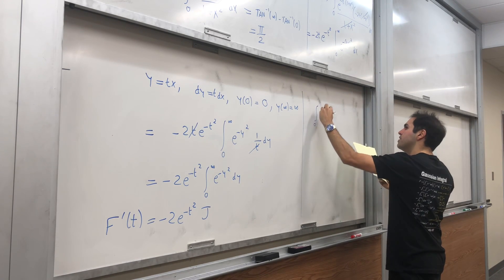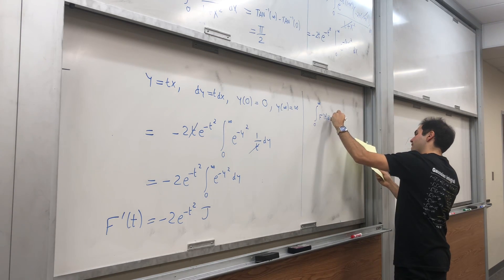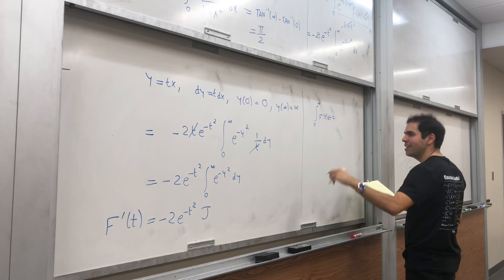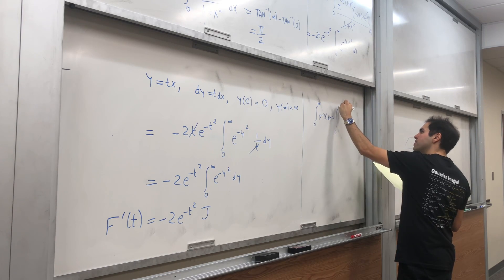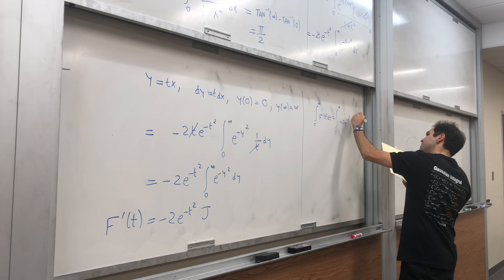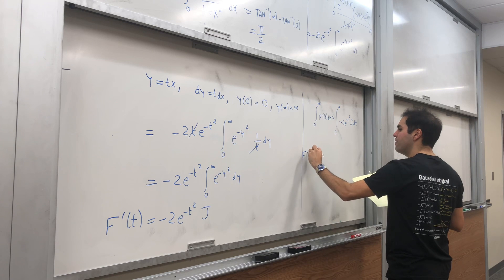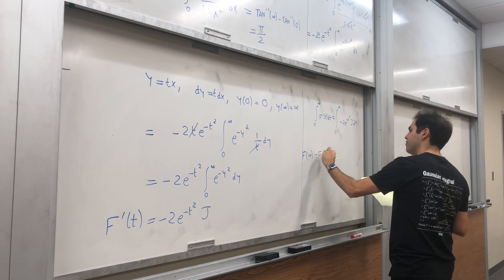So integral from zero to infinity of f prime of t dt equals to, by this formula, integral from zero to infinity, minus two e of minus t squared J dt. And this becomes f of infinity minus f of zero.